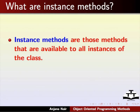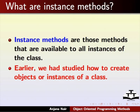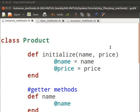What are instance methods? Instance methods are those methods that are available to all instances of the class. Earlier, we had studied how to create objects or instances of a class. Create a new file in gedit as shown in the basic level Ruby tutorials and name it instance_methods.rb. I have a working example of implementing instance methods. You can pause the tutorial and type the code as we go through it.